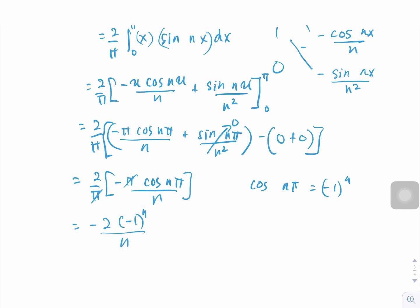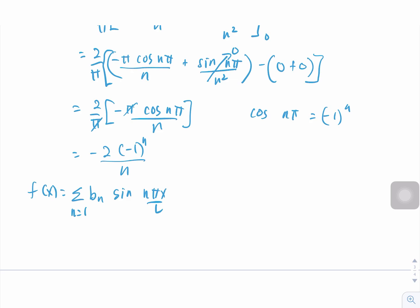The Fourier sine series is the summation of bₙ sin(nπx/L), from n=1 to infinity. Therefore, the Fourier sine series for f(x) = x is the summation of [−2(−1)ⁿ/n] sin(nx), from n=1 to infinity.